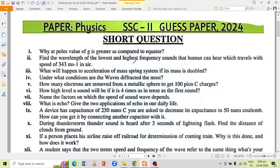Asalaamu alaikum, 10th Physics Guest Paper 2024 examination, first annual. Why at poles value of g is greater as compared to equator? Find the wavelength of the lowest and highest frequency sounds that humans can hear which travels with speed 343 meter per second in air. What will happen to acceleration of mass spring system if its mass is doubled?